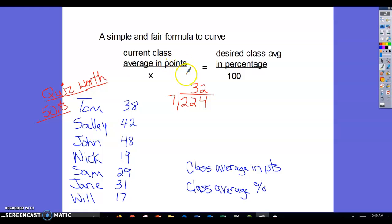The first thing we needed was the current class average in points—that's 32. So the class average in points is 32 out of 50, because the quiz is worth 50 points. When we look at that, 32 divided by 50 is 64%. That's low for a class average—that's not passing—so we probably want to do something to help this class get a higher score.